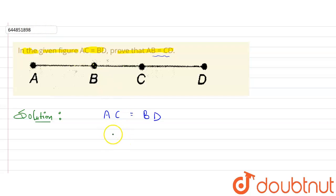So AC can be written as, you can see this is point A, this is point C, so AC can be written as AB plus BC.